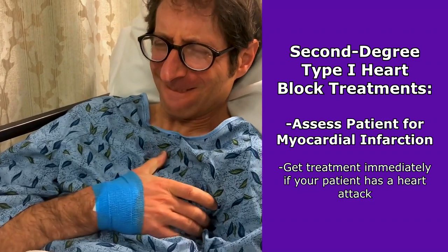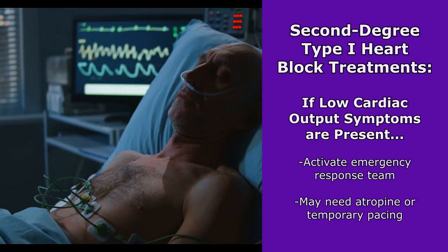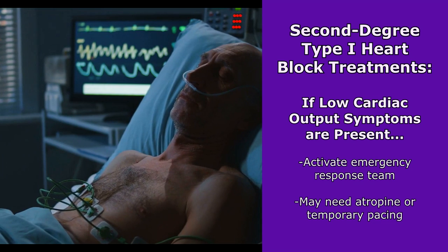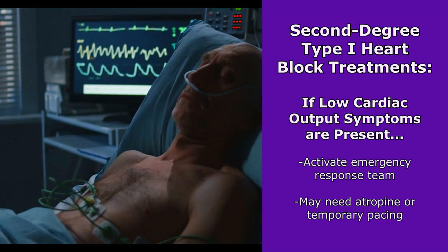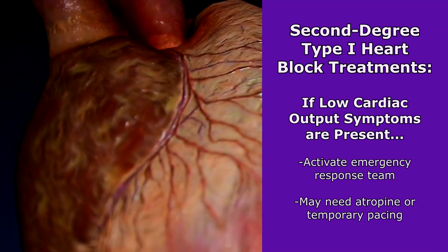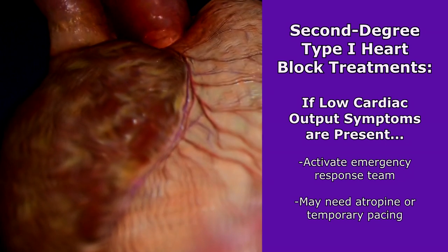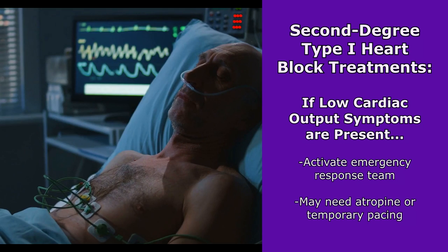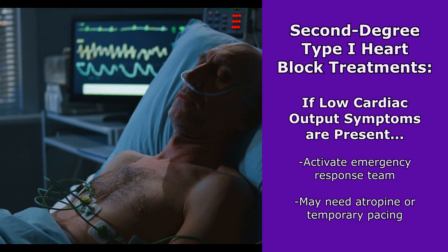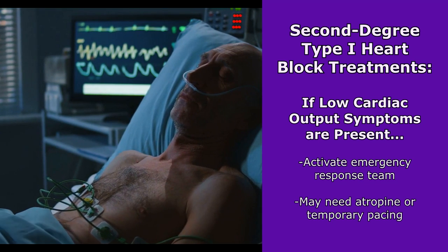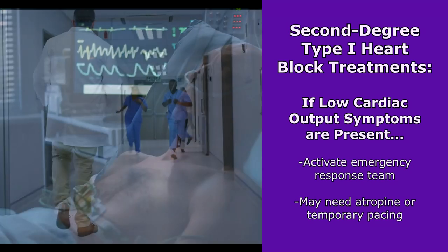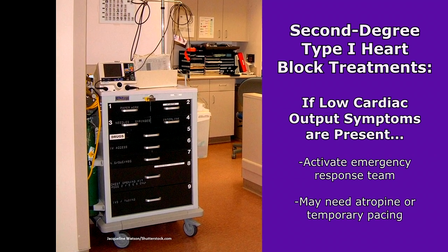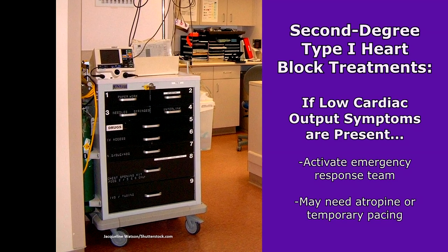If your patient is symptomatic — showing signs of low cardiac output such as mental status changes, a really weak pulse, severely low blood pressure, pallor, or dizziness — that tells you your patient is not perfusing and something is wrong. In that case, activate the emergency response system, and what may be ordered includes atropine or temporary pacing.